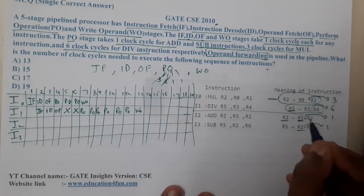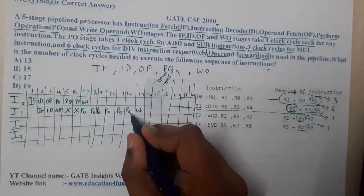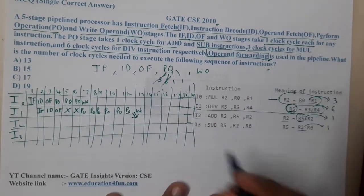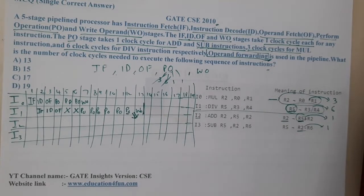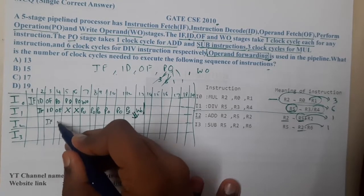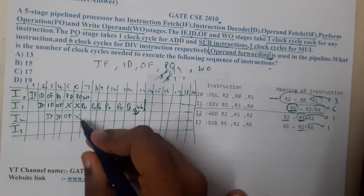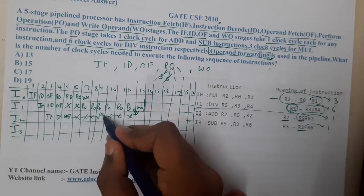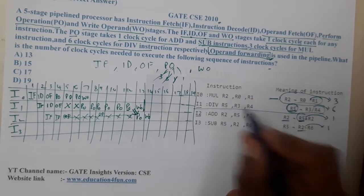Now, between I2 and I3 there is a dependency on R5. With operand forwarding, once PO produces the result, we can collect that value immediately — that's the essence of operand forwarding. Without forwarding, you'd wait until the full instruction completes (write-back). I2 starts with IF, then ID, then OF. Even after OF, the data isn't ready, so those cycles effectively act as stalls for operand fetch.